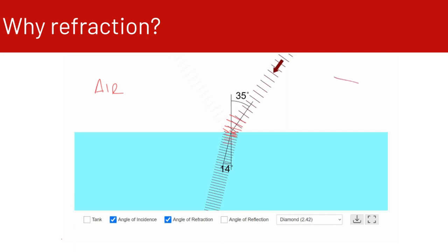If we draw the wavelengths and mark the new medium boundary, this part hits first and bends, then the next part comes in and bends. As the wave is hitting the medium, it bends a little bit at a time — so that's why the wave bends.